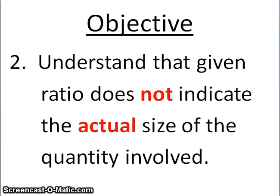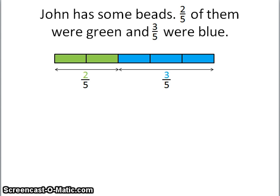I would like you to focus on the second objective, which is to understand that the given ratio does not indicate the actual size of the quantity involved. The previous two examples showed the quantity; the next one does not. Let's look at it. John has some beads. Two-fifths of them were green and three-fifths were blue.